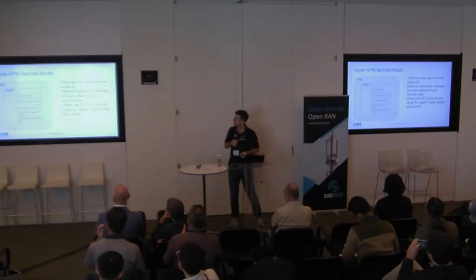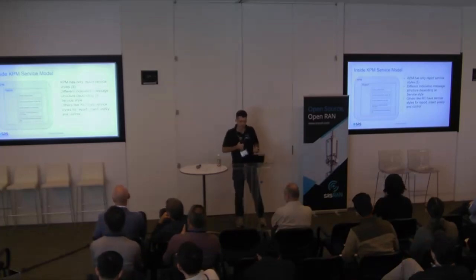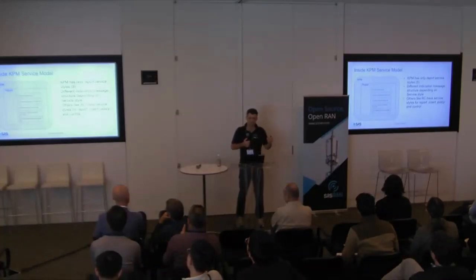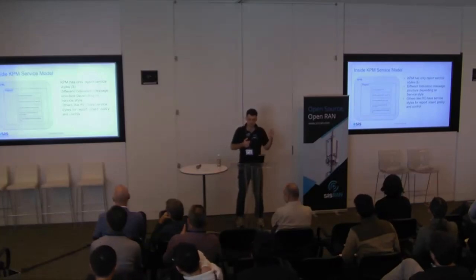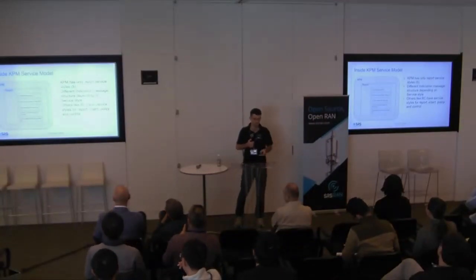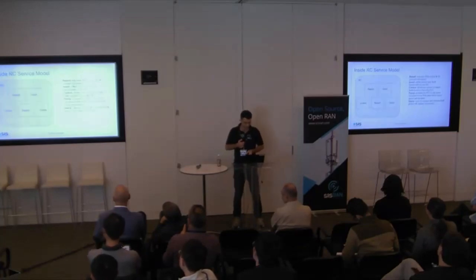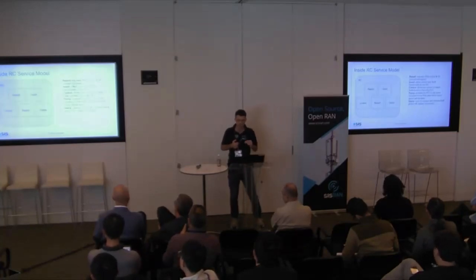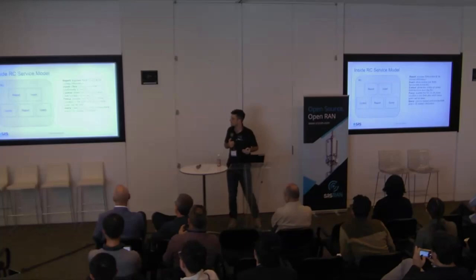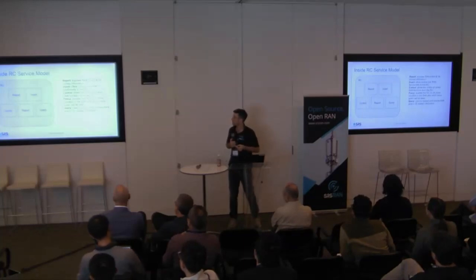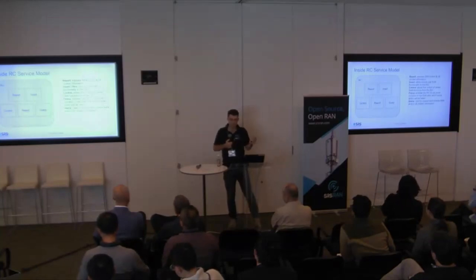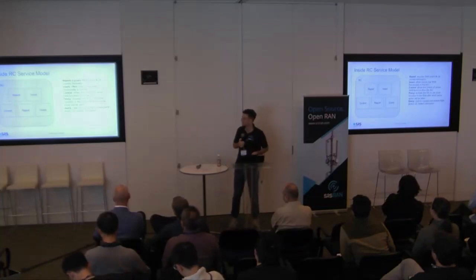Looking more deeply at the service models: KPM only does a report service but has five different styles. The different styles cover things like reporting on the E2 node as a whole, a specific UE, UEs meeting certain requirements, or all UEs. The RC service model has too many actions to go through, but it has all possible services — report, insert, control — allowing you to set policies or extract information only when certain criteria are met in the stack.